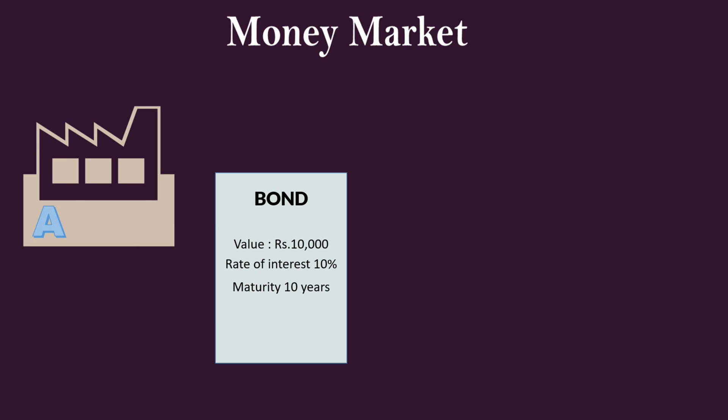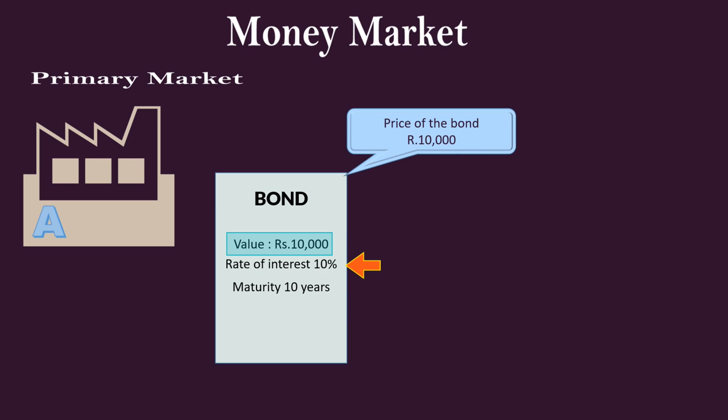Enterprise A wants to raise a loan of 10,000 rupees. It issues a bond offered for sale in the primary money market. The face value of the bond is 10,000 rupees. Anyone who wants to buy it for the first time has to pay 10,000 rupees, hence its price is also 10,000 rupees. It carries an interest rate of 10% per annum — let us call it the coupon rate. Whoever buys is entitled to get 1,000 rupees interest per annum. Its maturity period is 10 years, and it is a marketable bond, meaning the owner can sell it to anyone in the secondary market.